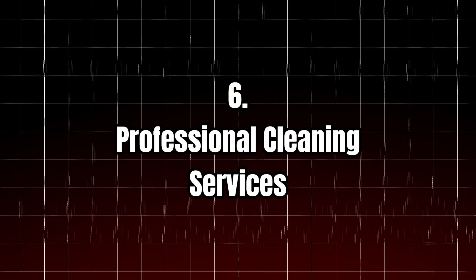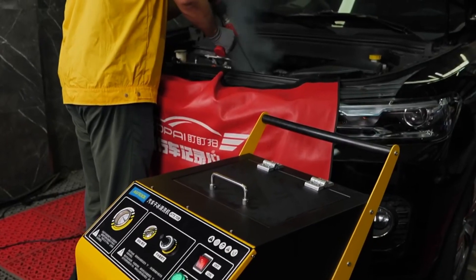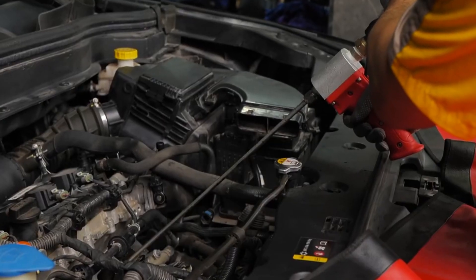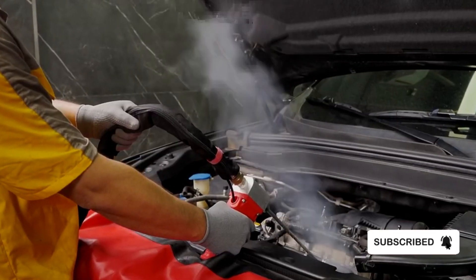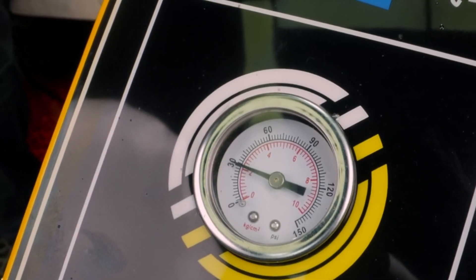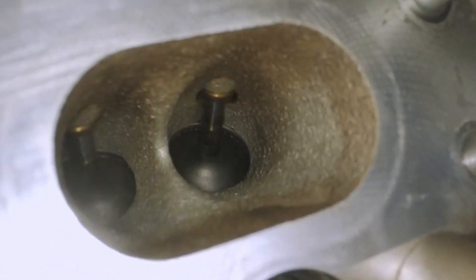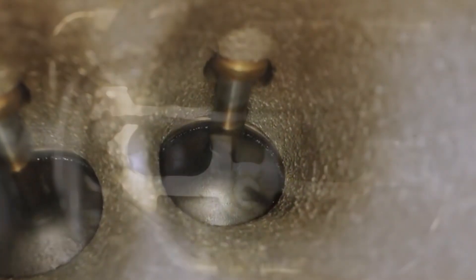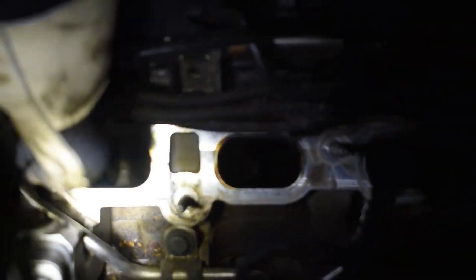If DIY solutions don't resolve the problem, it may be time to take your car to a professional for a more thorough cleaning. Professionals can use a method called walnut blasting, where ground walnut shells are used to scrub carbon off the intake valves. This process is safe, effective, and doesn't cause damage to engine components. In more severe cases, the torque converter or internal engine parts may need to be replaced, which requires the expertise of a trained technician.